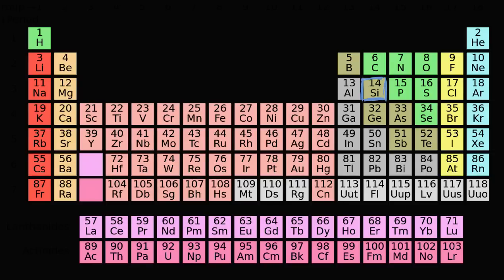Semiconductors are at the heart of the computing revolution in electronics — the phones in our pockets are all made of chips that have semiconductors in them. They're made from silicon. We can see silicon on the periodic table here, with an atomic number of 14, which means it has 14 protons, and a neutral silicon would also have 14 electrons. What we care about are the electrons in the outermost shell — the valence electrons.